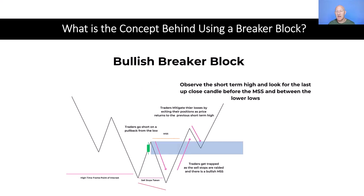So if we look at our bullish breaker block, it's obviously very similar, just the opposite. So we have our high timeframe point of interest and the market is trading lower towards that. This first push takes out that high timeframe point of interest, the market pulls back, then we get another push lower, and the sell stops below this swing low are taken.